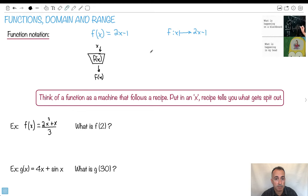Let's say I put in 2x minus 1 as my recipe. If I drop in x equals 2, that means everywhere there's an x, I replace it with 2, which means 2 times 2 is 4. 4 minus 1 is 3. So what comes out would be a 3.